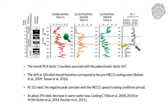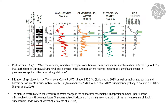Above this, at 2095 meters depth, we see a decrease in warm water taxa. This event, dated in correspondence to chron C17N, is correlated with the cooling event labeled as Cooling C in our Southern Ocean work, and later also defined in other areas as the Priabonian Oxygen Maximum — a cooling event at about 37 million years ago.